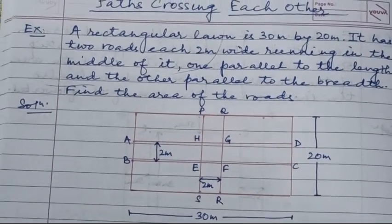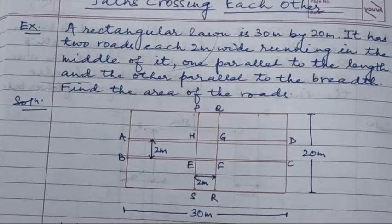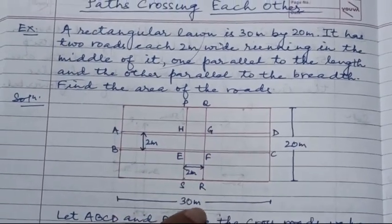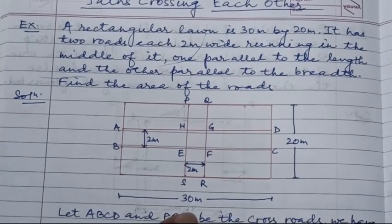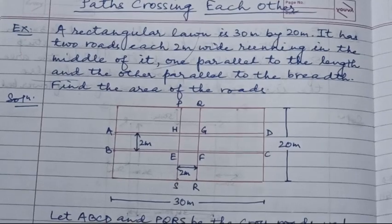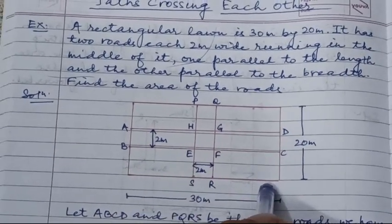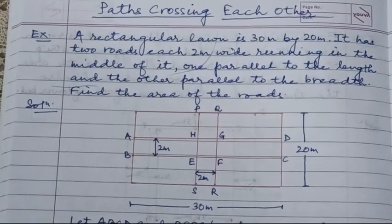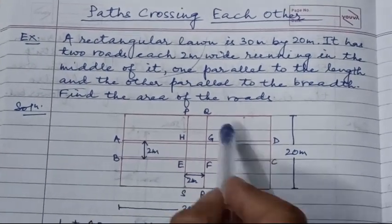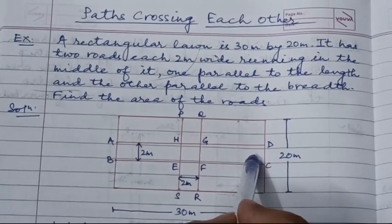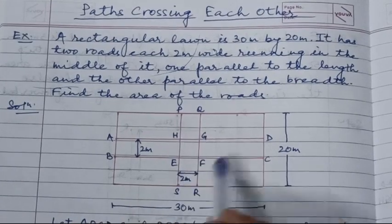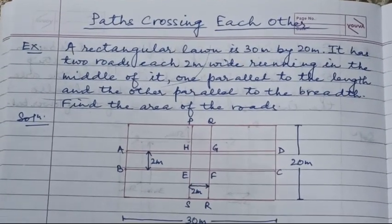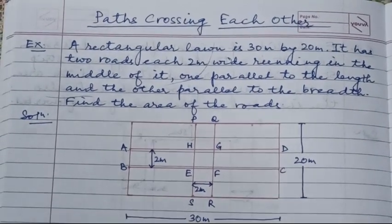ABCD is a rectangular piece of ground, and it has two roads as shown in the figure — one parallel to the length and the other parallel to the breadth. Together these are called crossroads. This figure is known as crossroads. This is usually observed in bigger parks, where you will see crossroads.